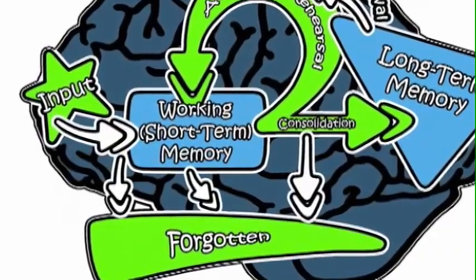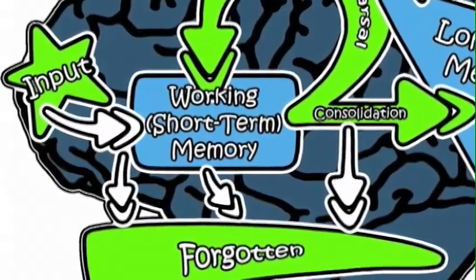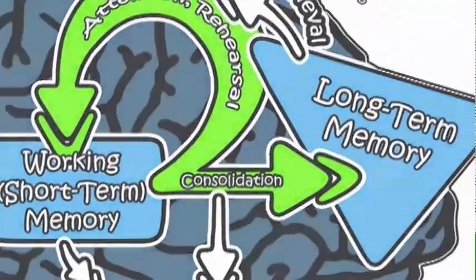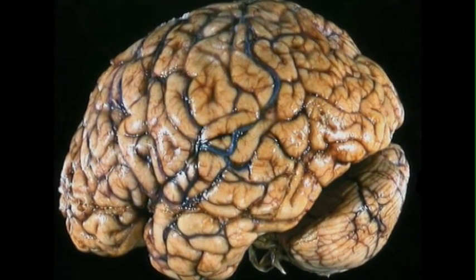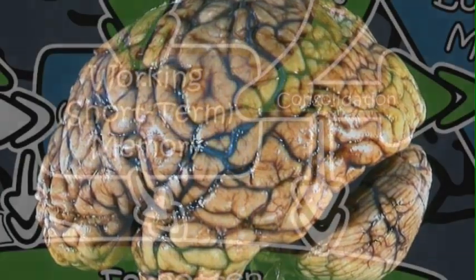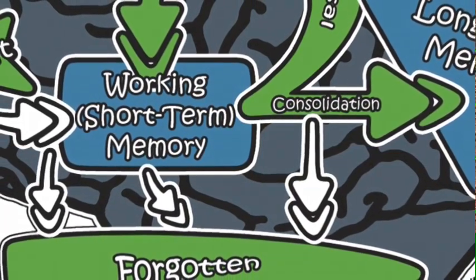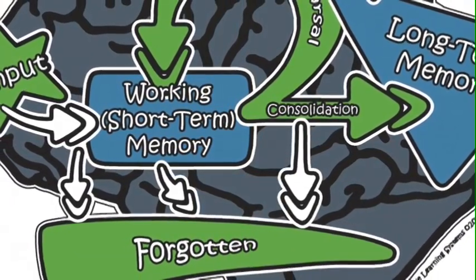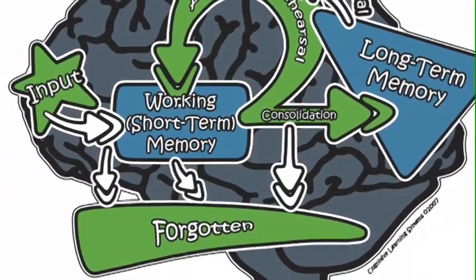In the information processing model, this is represented by the third arrow that leads to forgotten. For information to remain in long-term memory, new connections between nerve cells in the brain, or neurons, have to be made. This process is a physical change that involves the turning on of genes and making proteins. Learning is a physiological process, and like any other physiological process, it's going to be affected by the overall status of our body. Things like sleep, nutrition, exercise, or drugs will have a big effect on how we learn.